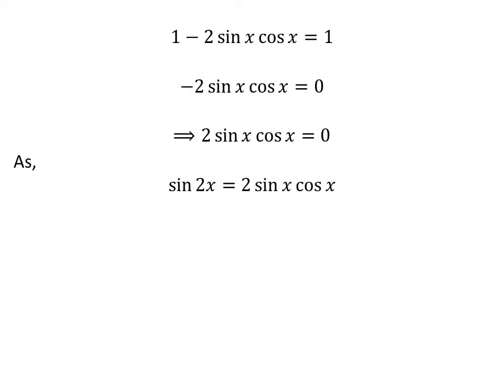We know the trigonometry identity: sin of 2 times x is equal to 2 times sin of x times cosine of x. The proof of this identity has been explained in the video in the upper right corner, and the link is also given in the description. Application of this identity gives us sin of 2 times x is equal to 0.